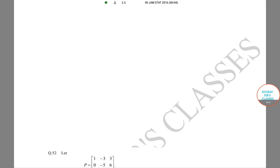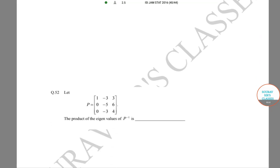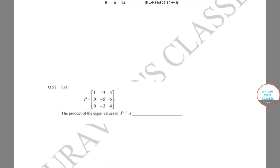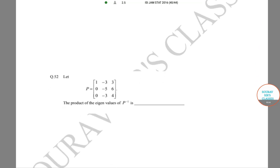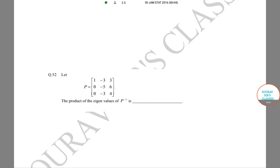Hello students, welcome to Sort of Search Classes. The problem we want to solve today: P is given as a 3x3 matrix with entries 1, -3, 3, 0, -5, 6, 0, -3, 4. The product of the eigenvalues of P inverse is what?